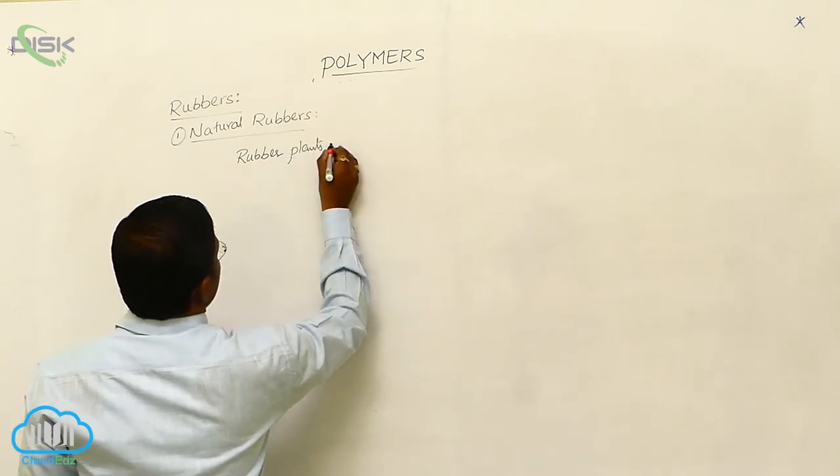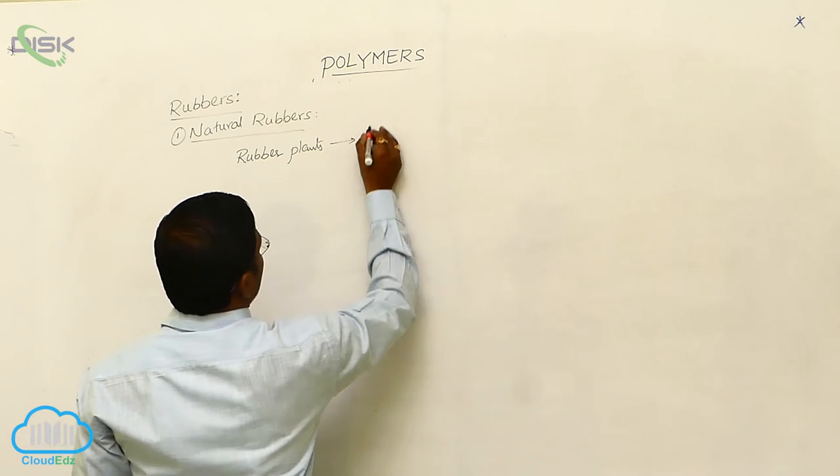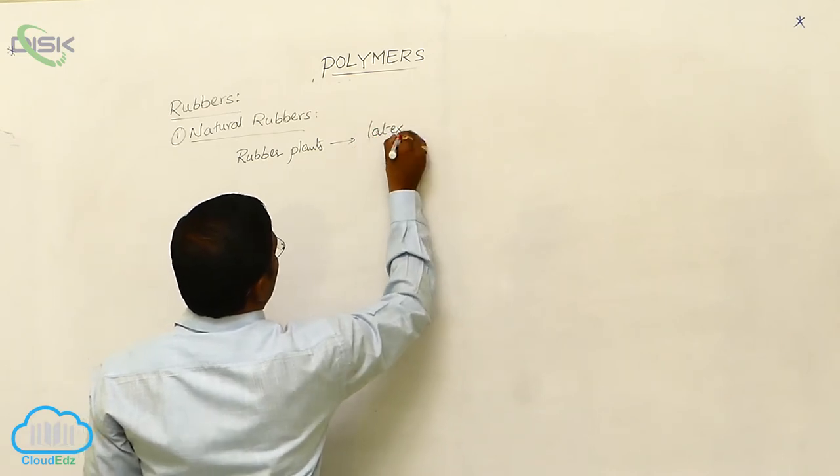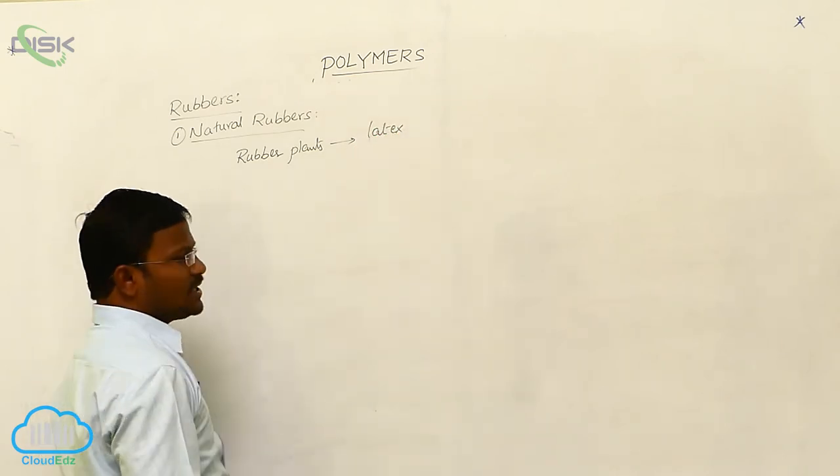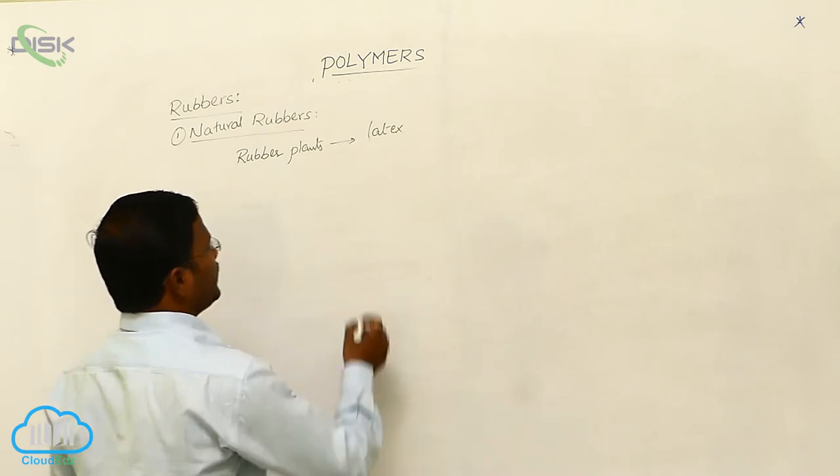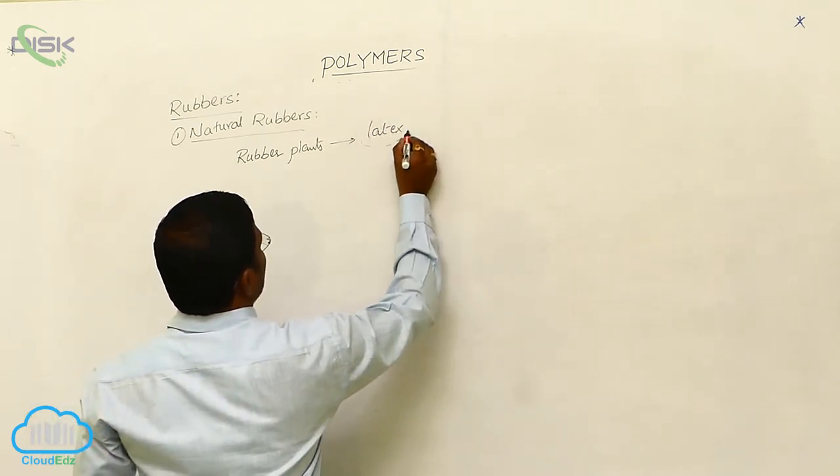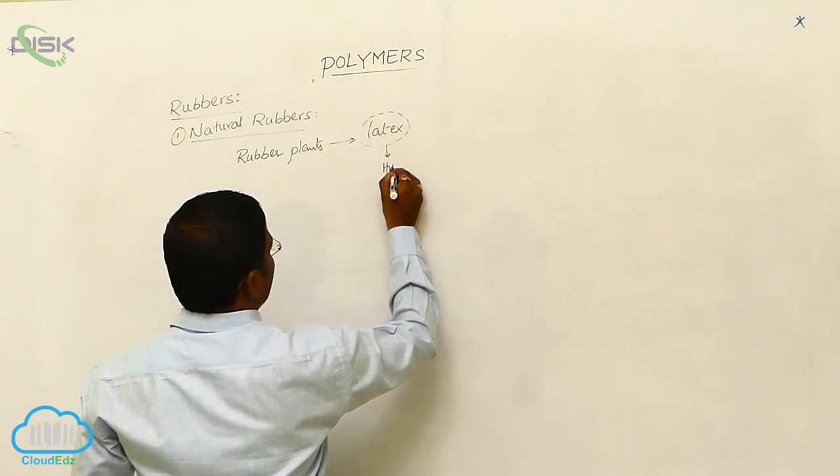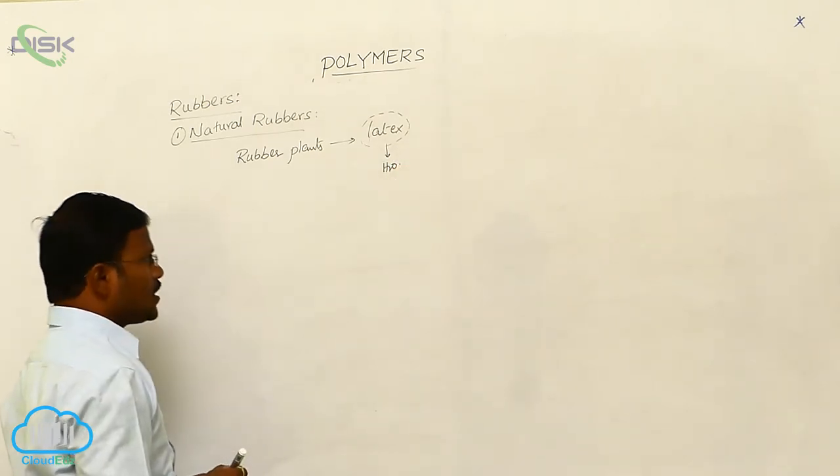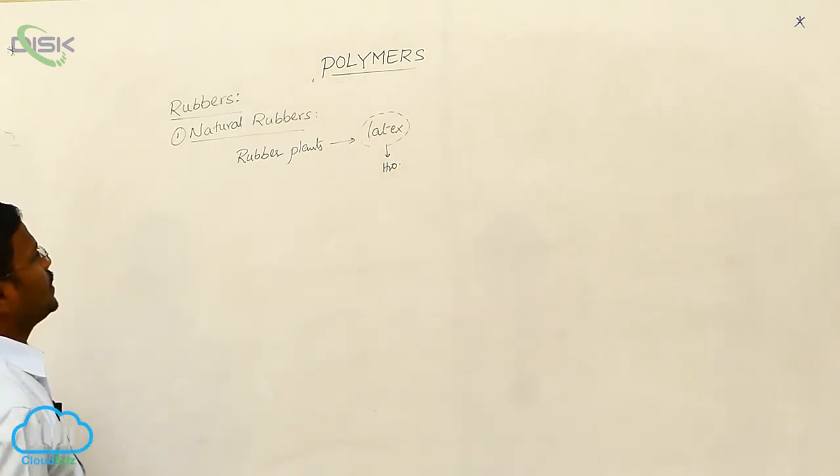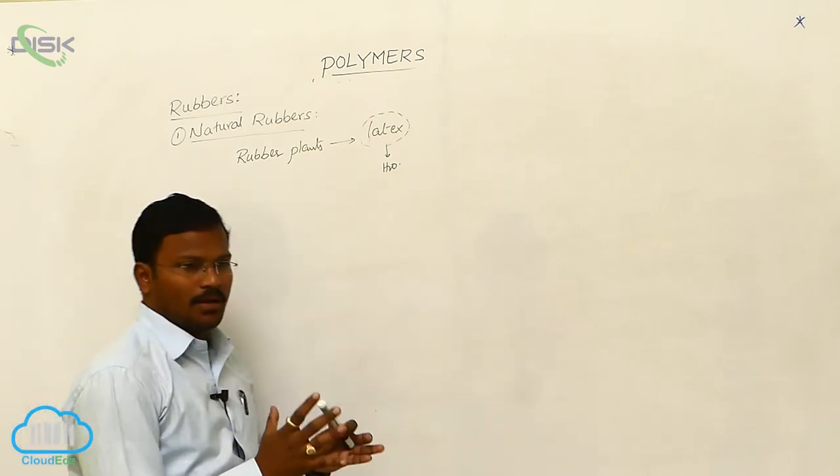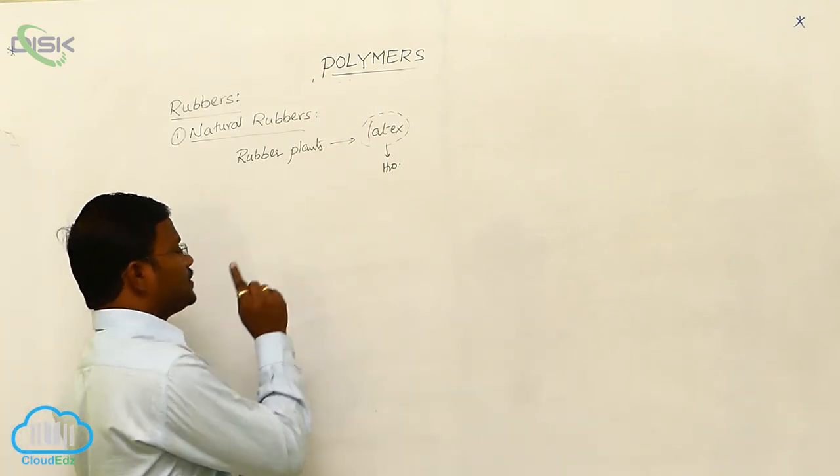The latex produced from rubber plants, by using this latex as starting material, when this latex reacts with water or dissolves in water, it is converted into rubber. The resulting rubber is called natural rubber.